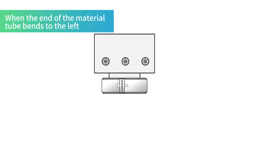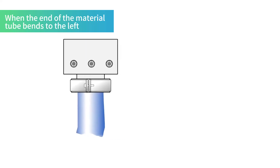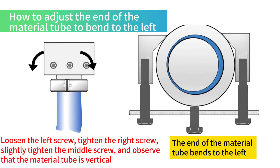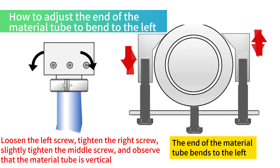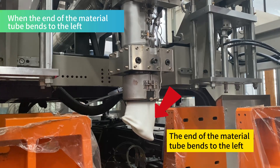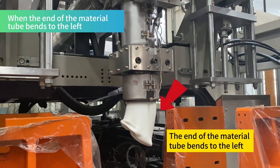When the end of the material tube bends to the left, how to adjust the end of the material tube that bends to the left: After the material tube is adjusted vertically, when the end of the material tube bends to the left, the gap on the right side is larger.